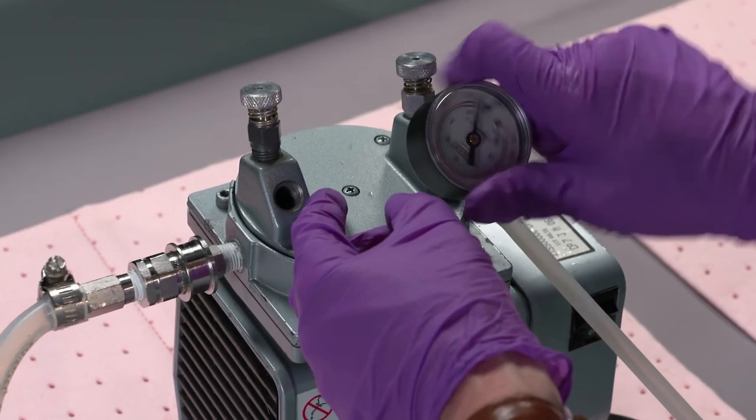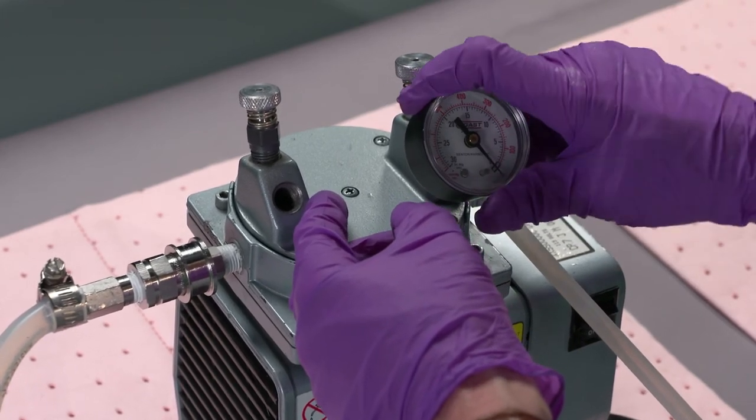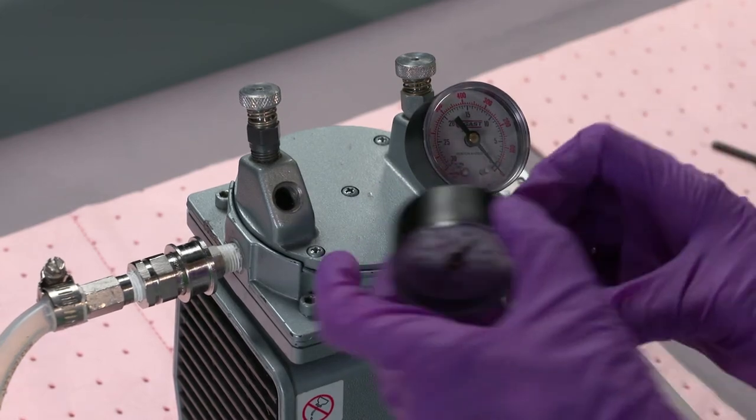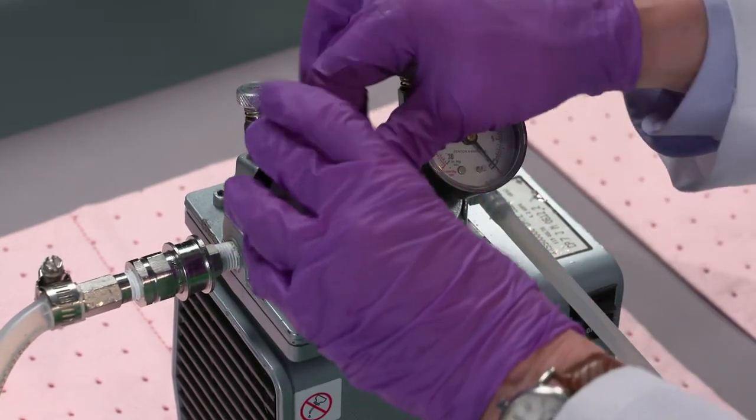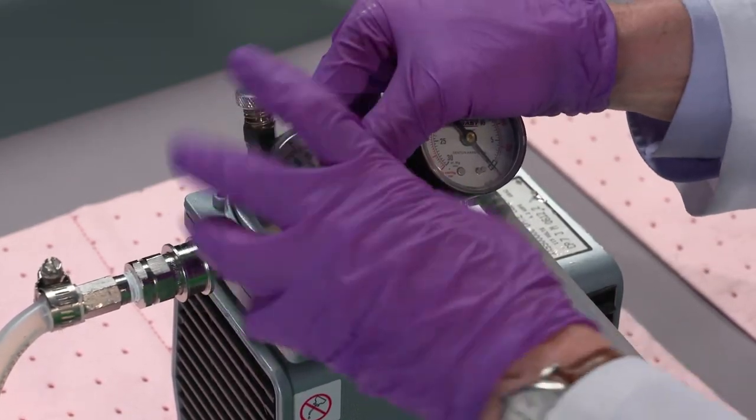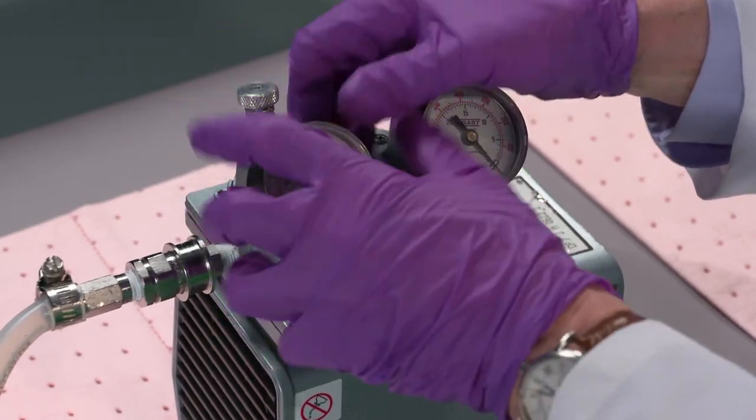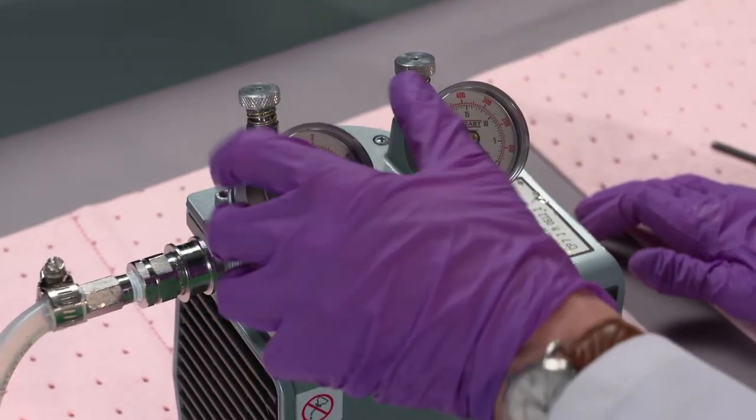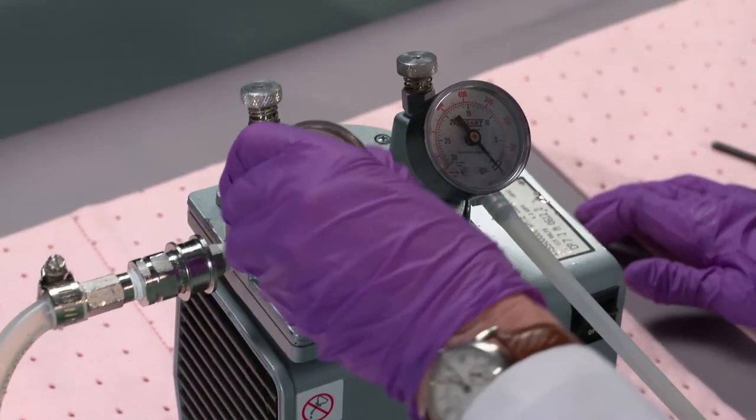Now you screw in the two gauges onto the back here. Just hand tight. You don't have to put a tool on them or anything to tighten them in.